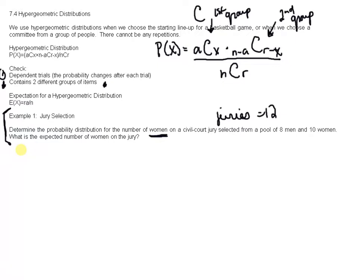So let's start this probability distribution. Let the random variable X denote the number of women on the jury. So there's a pool of eight men and ten women. I'm going to make the chart as well. So we'll do X, then we'll do P(X).